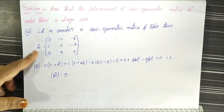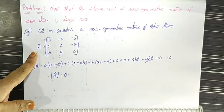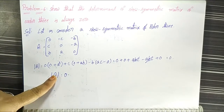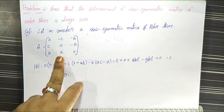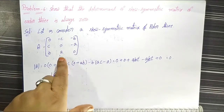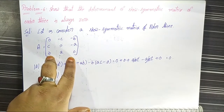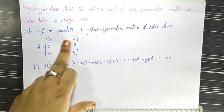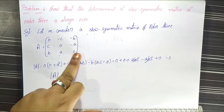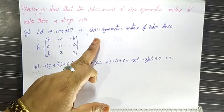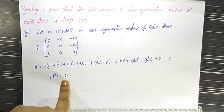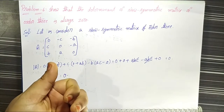We take one skew symmetric matrix A, then find the matrix determinant det(A) and show its value equals zero. We can take any skew symmetric matrix for our convenience. This example problem shows one skew symmetric matrix whose determinant value equals zero.